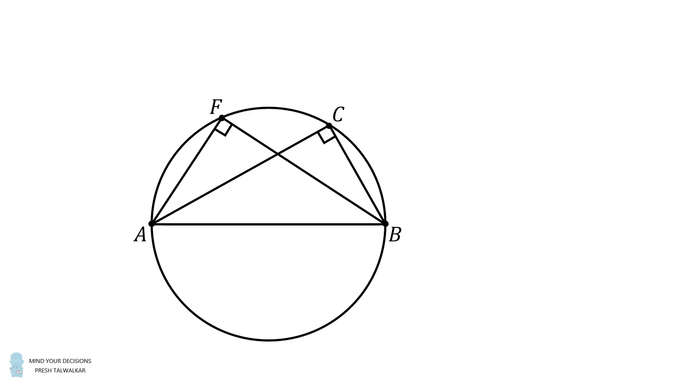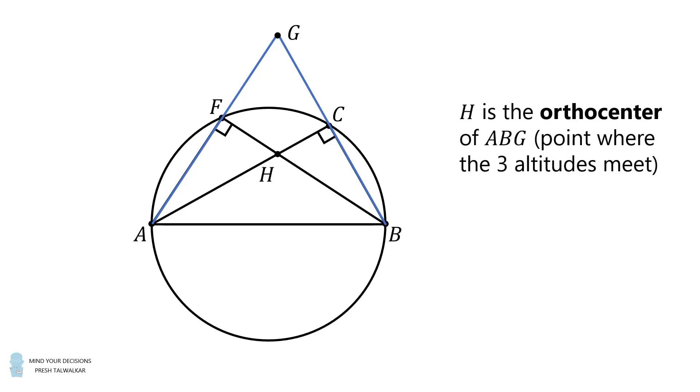From here, extend AF and BC to form a point G. Now we have a triangle AGB. In this triangle, AC is an altitude upon BG, and BF is an altitude upon AG. The point at which they intersect is H, and that's the orthocenter of the triangle ABG.